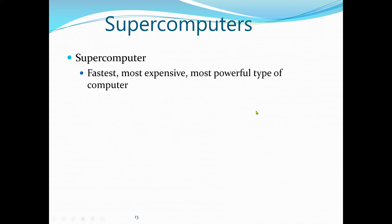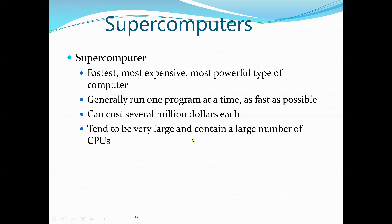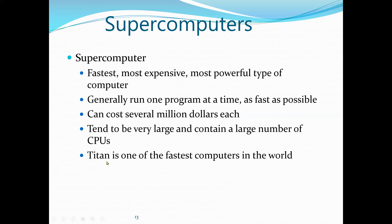Next are supercomputers. There is not much difference between supercomputers and mainframes, but the main difference is that mainframes are used to process business data — customer transactions and business operations — while supercomputers are used in scientific environments to run very large, complex algorithms. For example, weather prediction or weather forecasting may require a supercomputer. They are faster, very expensive, and very powerful. They generally run one program at a time as fast as possible, can cost several millions of dollars each, and contain a large number of CPUs. Titan is one of the fastest supercomputers in the world.